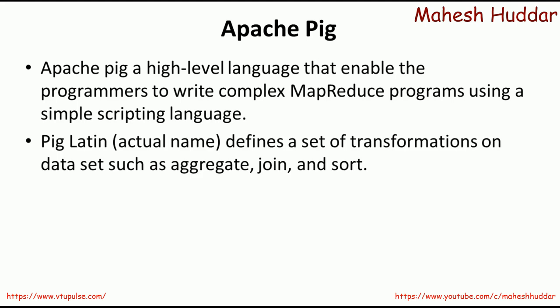Pig Latin defines a set of transformations on datasets such as aggregate, join, and sort. These are the three main things in MapReduce programs. We need to aggregate the results, we need to join the results from different mappers and reducers, as well as we need to sort the results. Rather than writing complex code for doing all these things, we have very simple commands in Apache Pig to implement all of these easily.